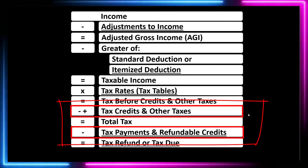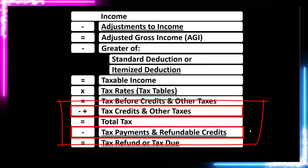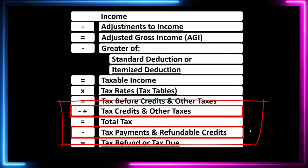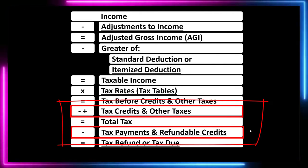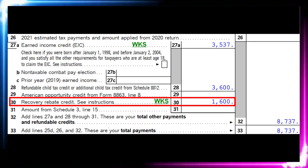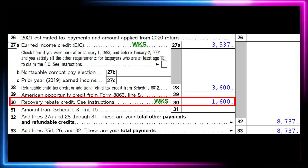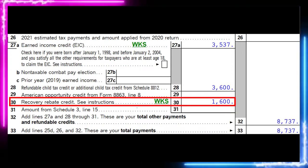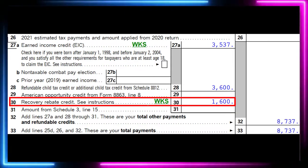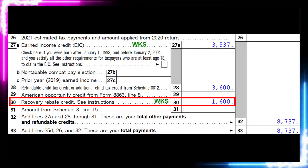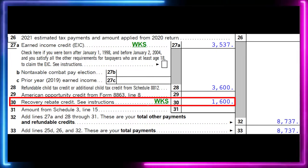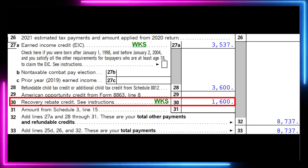Non-refundable credits don't take the tax liability below zero, whereas refundable credits may — and if they did, you'd get something still called a refund, but it's really more of a benefit program at that point. This is the second page of Form 1040. We're looking at line 30, the recovery rebate credit. We've got the little worksheet to calculate it. It is down in the refundable area, meaning it could take the tax liability in essence below zero.